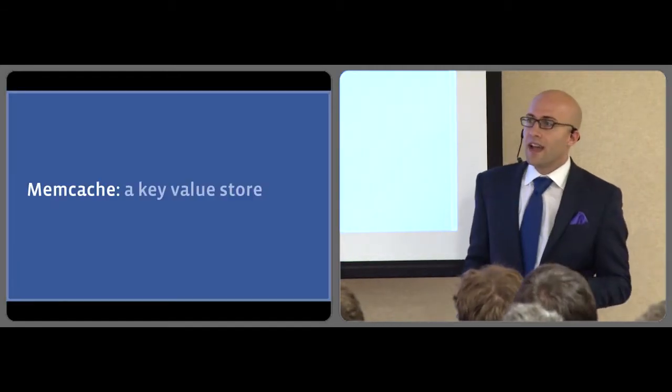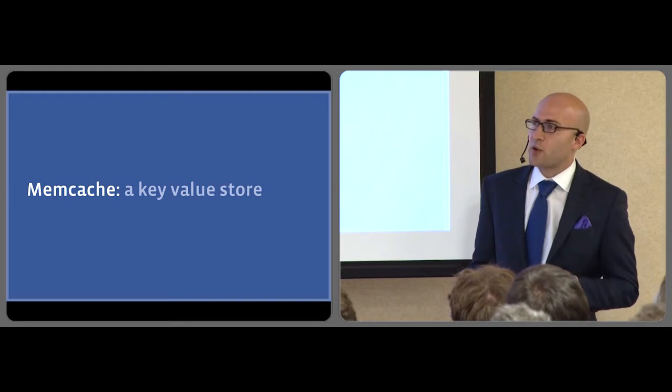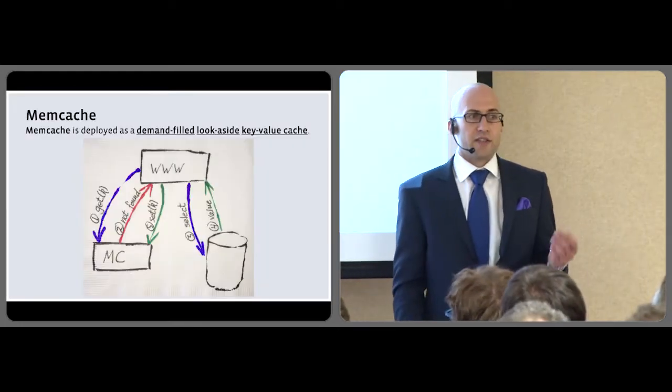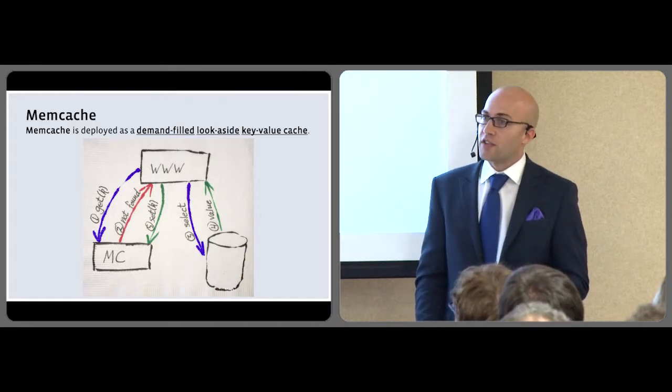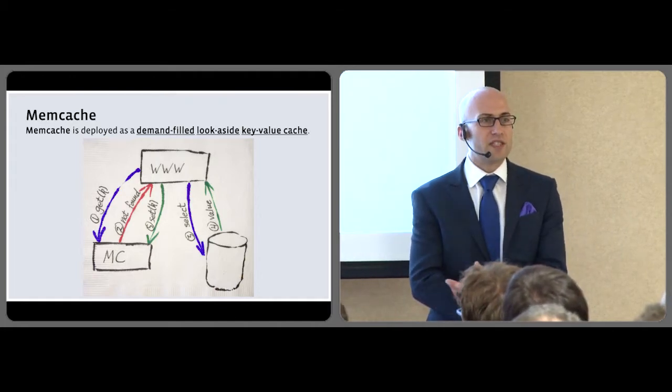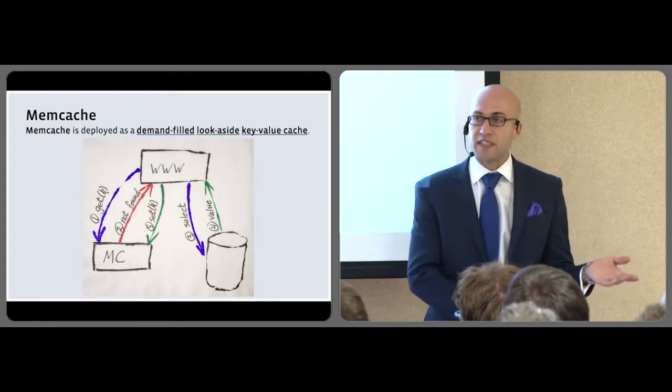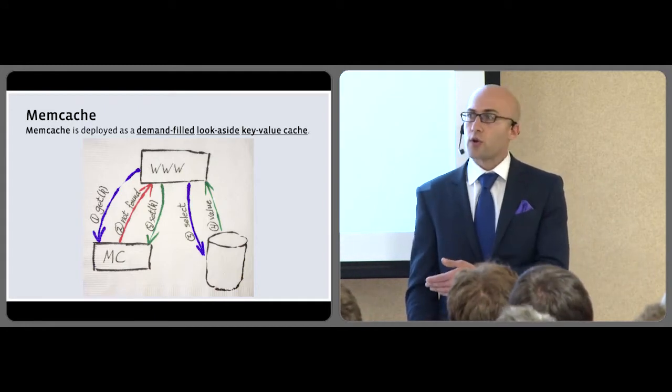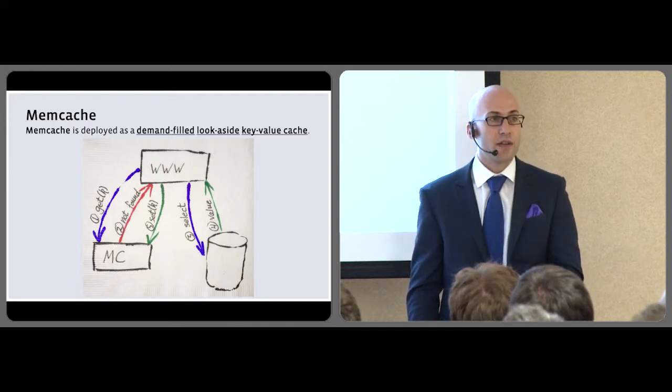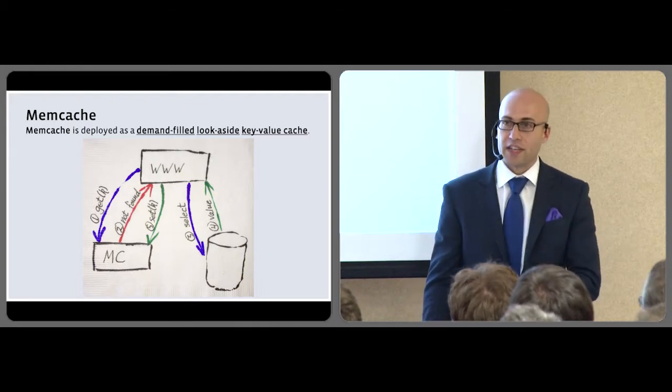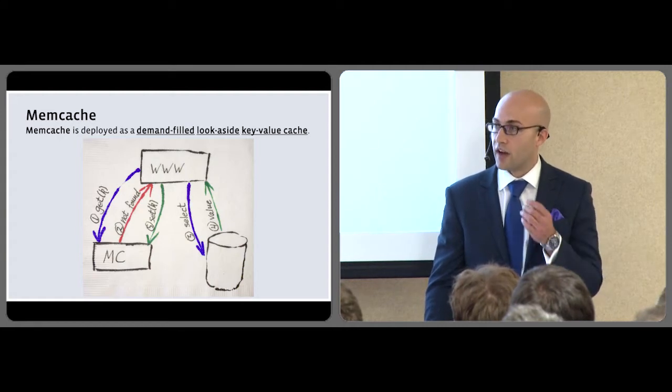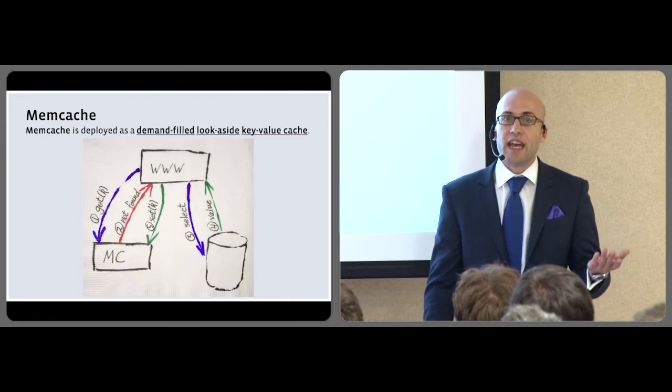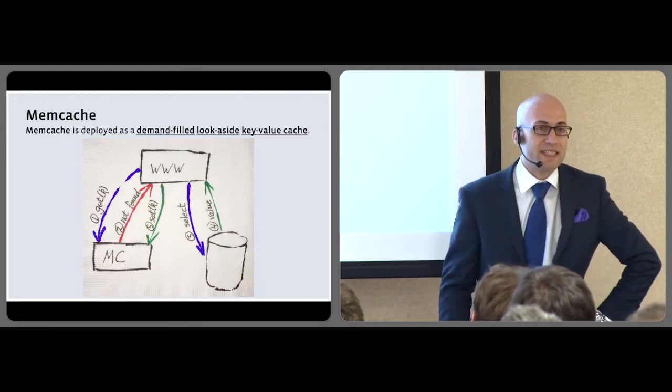Let's talk about Memcache. We use Memcache at Facebook roughly the same way as most of you probably do, as a look-aside on-demand fill cache. So when we need a piece of data, we look to see if it's in Memcache. If it's not, we go to the data store. Sometimes it's the database, sometimes it's an expensive computation. Then we put it back in the cache, and then subsequent requests for that element of data can be answered with our requirement of one millisecond.